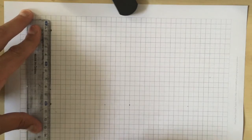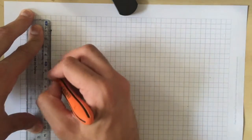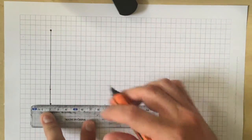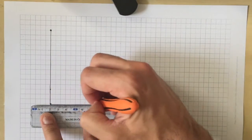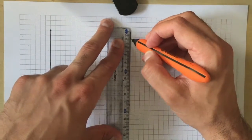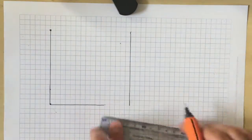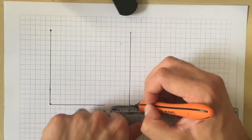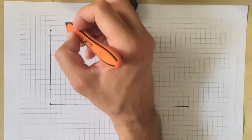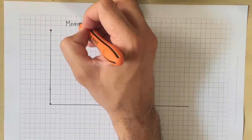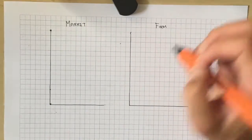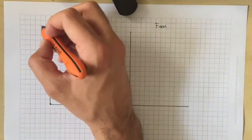What I'm going to do today is show you how to draw a diagram for perfect competition by showing you side-by-side graphs. The diagram on the left is going to be for the market, the diagram on the right is going to be for the firm. I'm going to label this one on the left 'market' and this one on the right 'firm'.